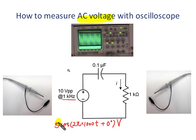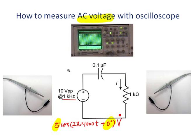To measure the AC voltage, we need to measure both the magnitude and also the phase angle. For such a simple circuit, let's assume that we are interested in the voltage across the resistor, VR. So we want to measure both the voltage magnitude and phase angle for VR.